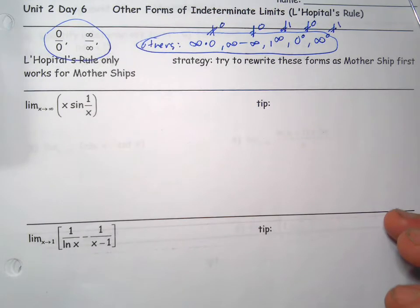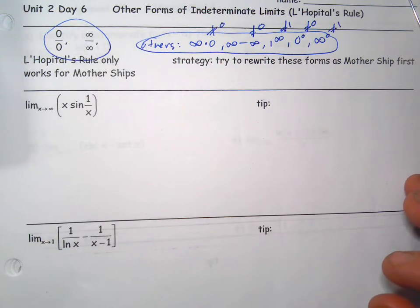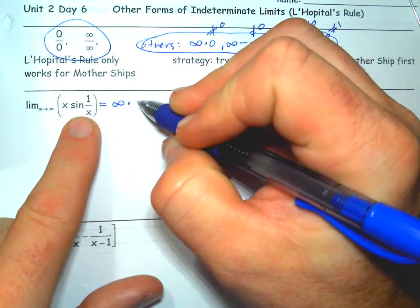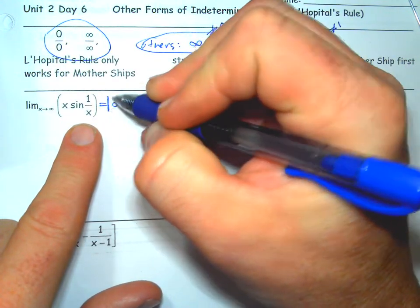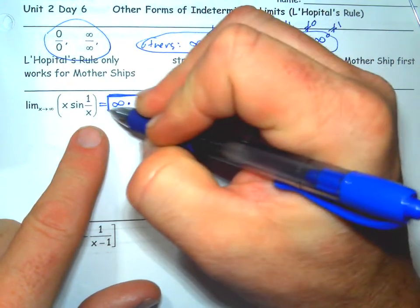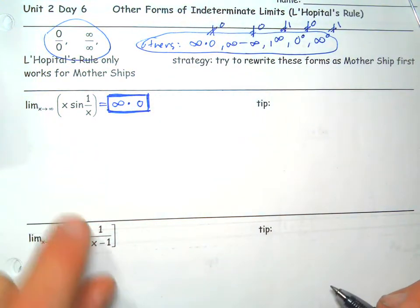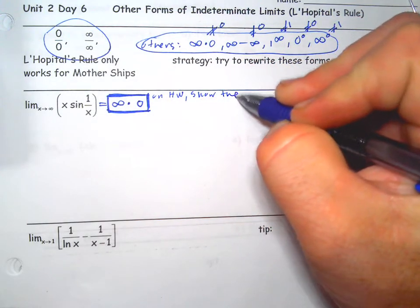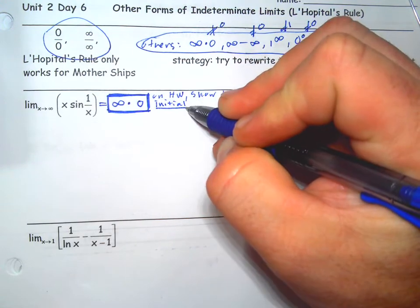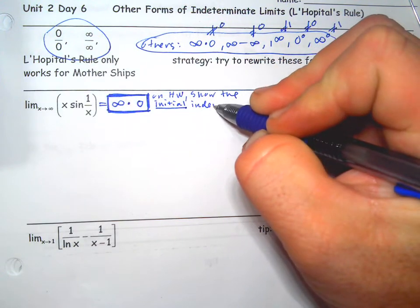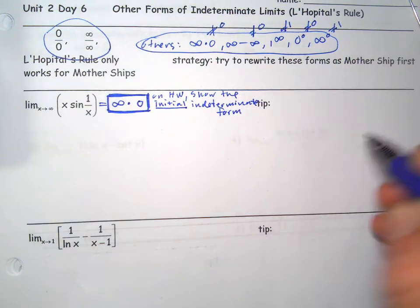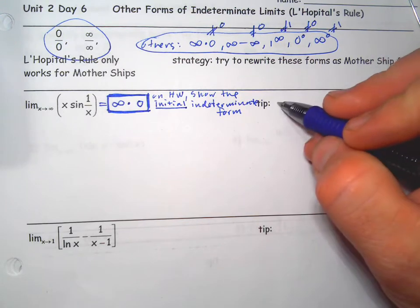These are really going to fall into a handful of situations that will have similar strategies. So this first one — if we plug in, we get infinity times sine of zero, which is zero — that's the infinity times zero indeterminate form. On the homework and your next test, I want you to show the initial indeterminate form. The tip is: we want to change it to one of the forms we can use — zero over zero or infinity over infinity.